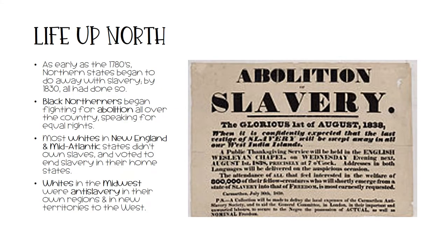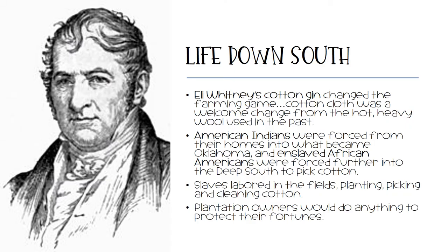As early as the 1780s, Northern states began to do away with slavery. By 1830, all had done so. Black Northerners began fighting for abolition all over the country, speaking for equal rights. Most white people in New England and the mid-Atlantic states didn't own slaves and therefore voted to end slavery in their home states. White people in the Midwest were anti-slavery in their own regions and in new territories to the West. Down South, Eli Whitney's cotton gin had changed the farming game. Cotton cloth was a welcome change from the hot, heavy wool that was used in the past.